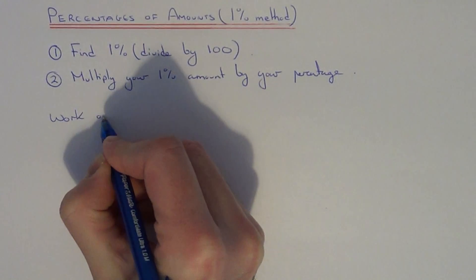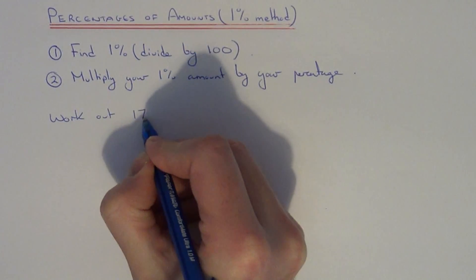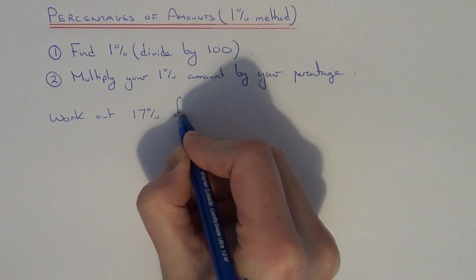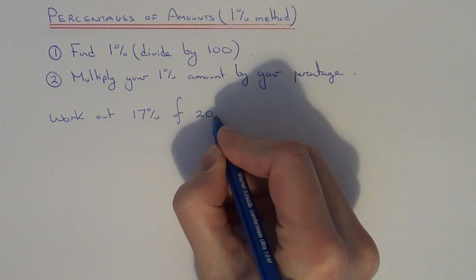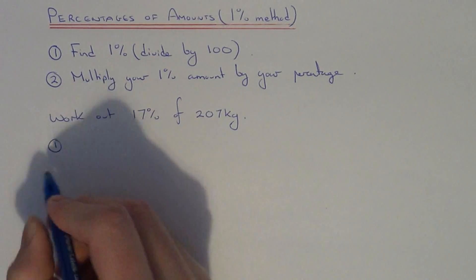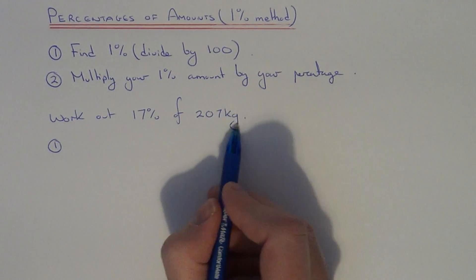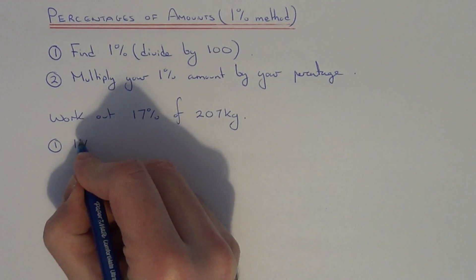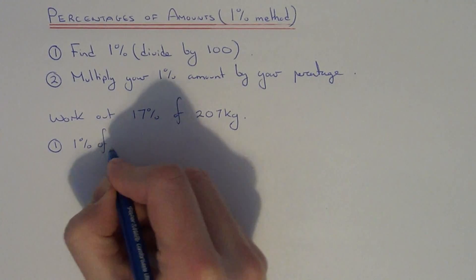Work out 17% of 207kg. So step 1, first of all find 1% of 207kg.